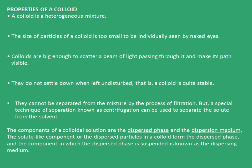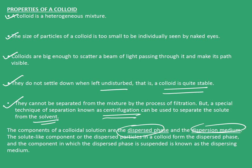Now let's look at some properties of a colloid. A colloid is a heterogeneous mixture. The size of particles of a colloid is too small to be individually seen by the naked eye. Colloids are big enough to scatter a beam of light passing through them and make its path visible. They do not settle down when left undisturbed — that is, a colloid is quite stable. They cannot be separated from the mixture by filtration, but a special technique known as centrifugation can be used to separate the solute from the solvent. The components of a colloidal solution are the dispersed phase and the dispersion medium. The solute-like component forms the dispersed phase, and the component in which it is suspended is called the dispersing medium.